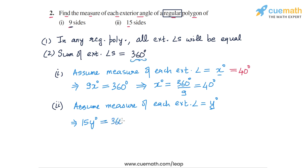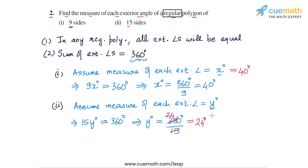So 15y = 360 degrees, which gives us y = 360 ÷ 15. To calculate 360 ÷ 15: 36 ÷ 15 is 2 remainder 6, giving us 24. So 360 ÷ 15 = 24. Therefore, the answer for part 2 is that the measure of each exterior angle of a 15-sided regular polygon is equal to 24 degrees.